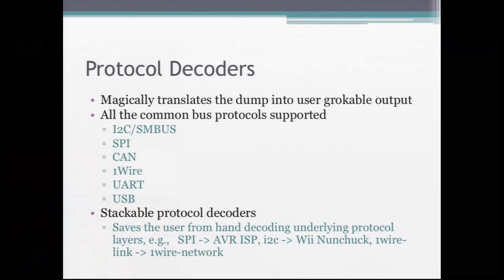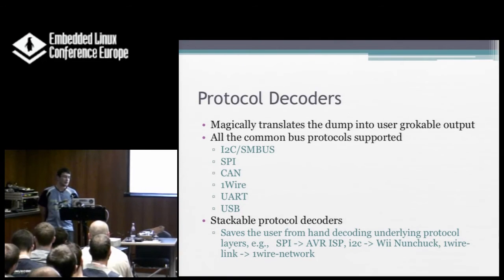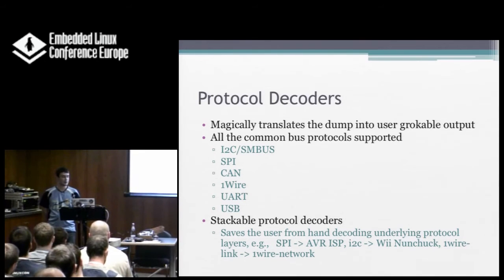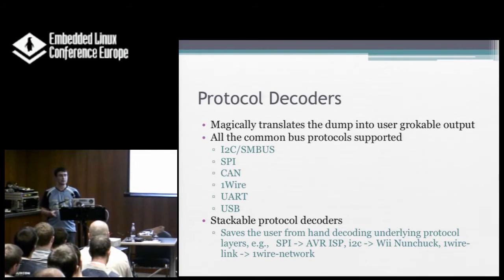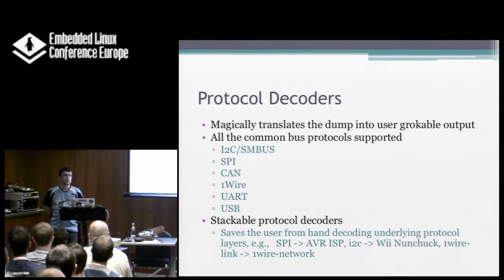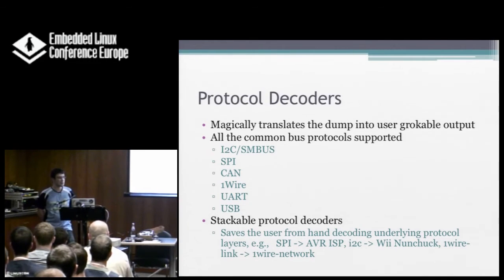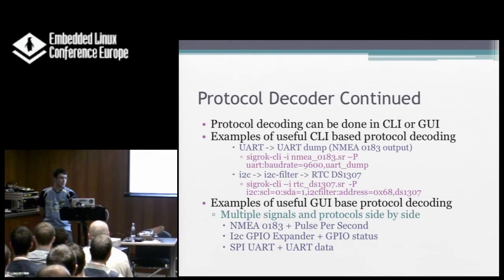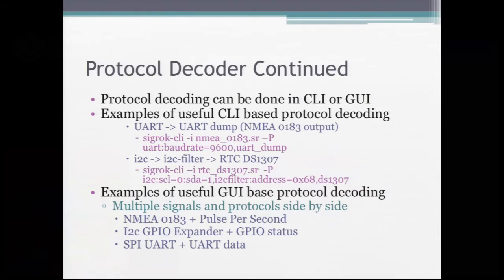Protocol decoders — that's the main advantage of SIGROC. A lot of applications that come with logic analyzers can do protocol decoding, but it's pretty rare. In the future we'll have stackable decoders, so you can take an I2C dump and pipe it into another decoder below it for a certain device. For example, I2C into a Wii nunchuck: instead of seeing just a bunch of commands, you can actually see the actual up, down, button presses in the output. We support all the common protocols like I2C, SPI, CAN, OneWire, and UART. Protocol decoding can be done within the client or the GUI.